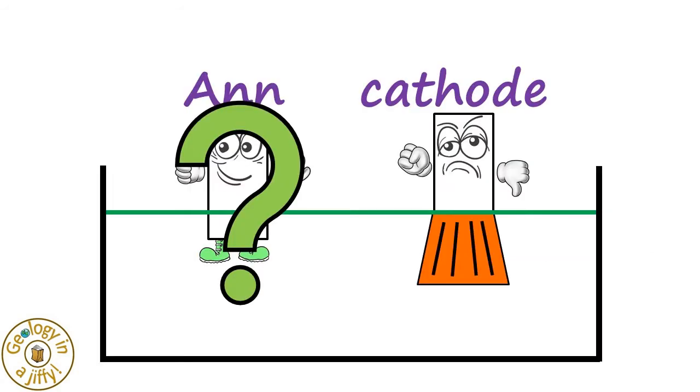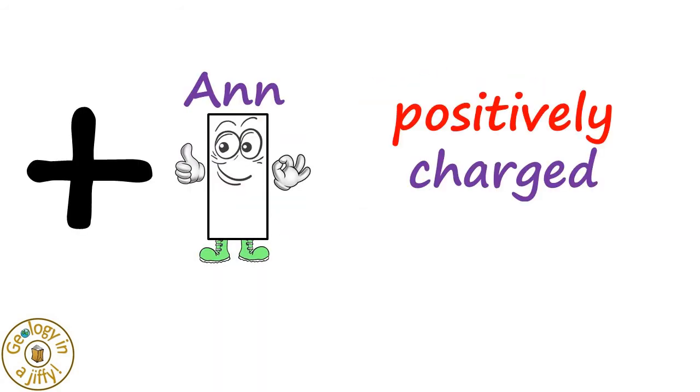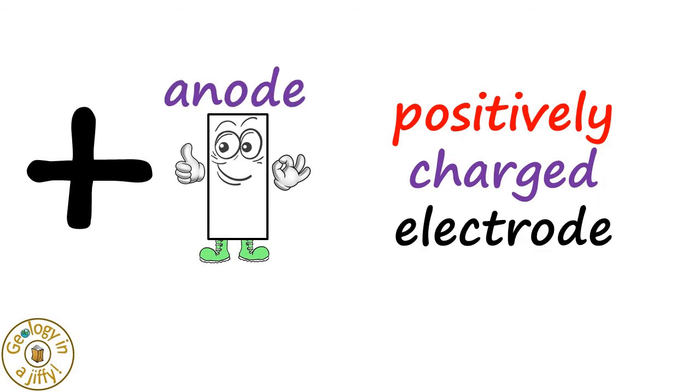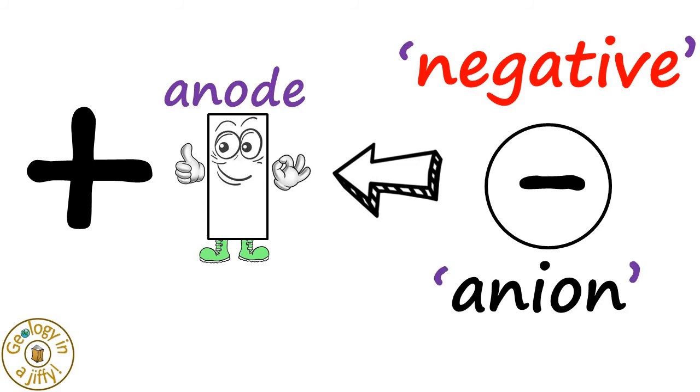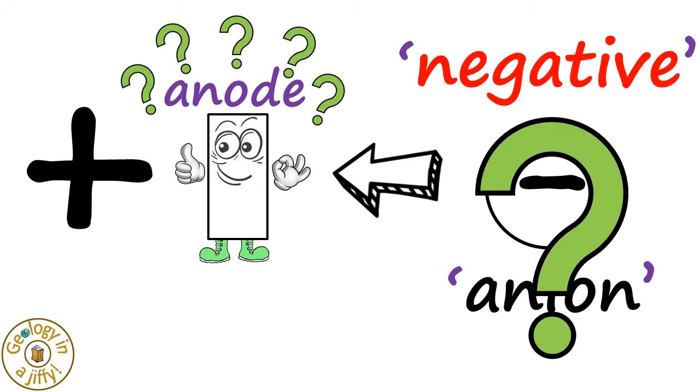But what happens with Anne? We know that Anne is a positively charged electrode called the anode, and attracted to the anode are the negative ions called anions. But how can I remember that?